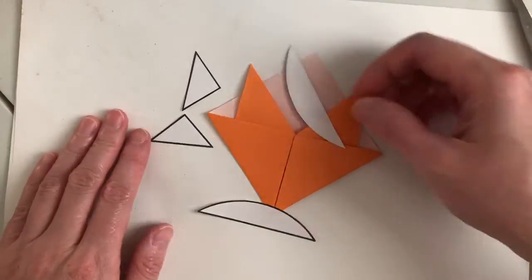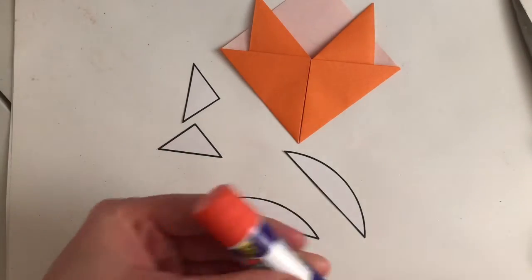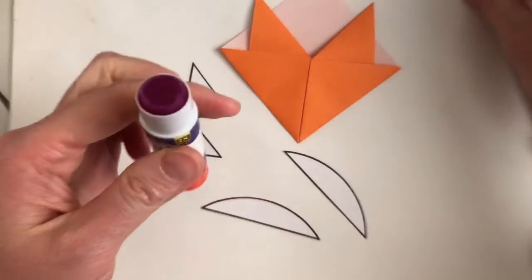When you're done cutting, you're going to end up with four shapes: two curvy ones and two triangles.